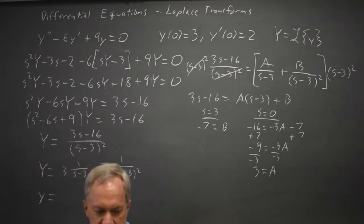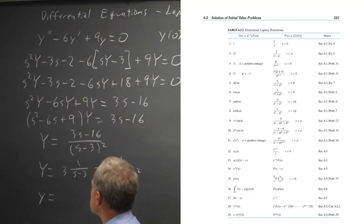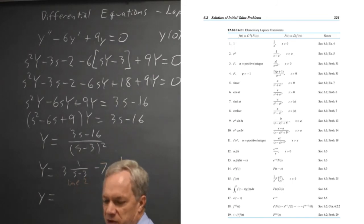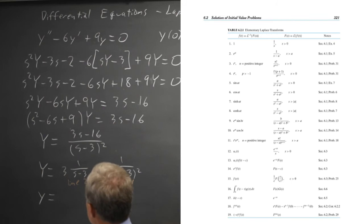Looking at my table of Laplace transforms, 3 times 1 over s minus 3 is line 2 of my table and 1 over s minus 3 squared is line 11. And I often write down my line numbers so I don't lose track of what I'm doing or so I can check and see what I have done.